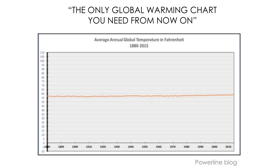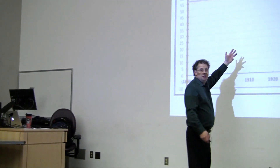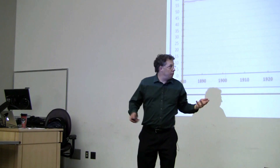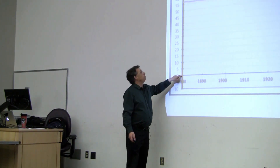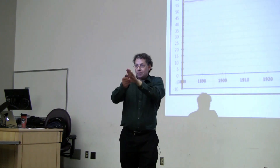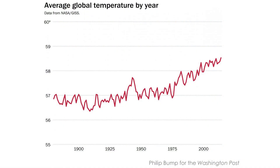Here's a notorious one from the Powerline blog, picked up and tweeted by the National Review, entitled 'the only global warming chart you need from now on.' If we step back and look at this, it looks flat — anybody see the uptake? What's happened is they've included zero Fahrenheit in this diagram, and therefore that has swamped out all of the subtle variations. If we zoom in, as Philip Bump did in the Washington Post, we can see a much more accurate picture of what's happening.